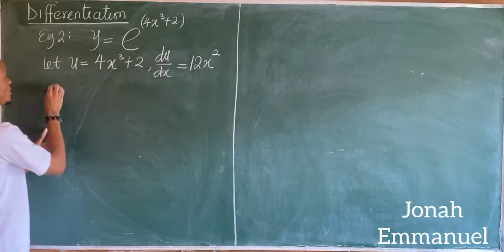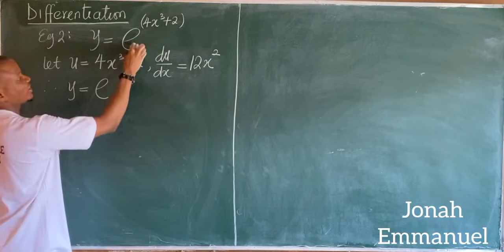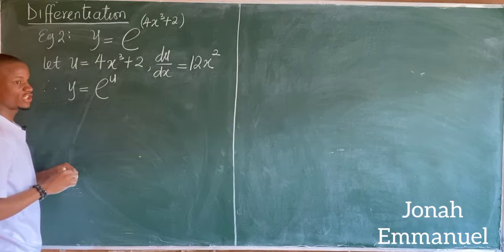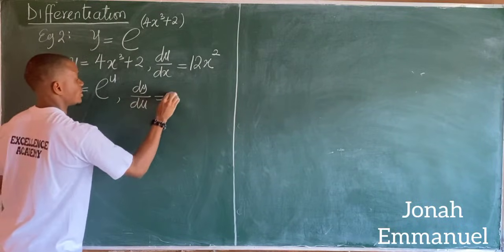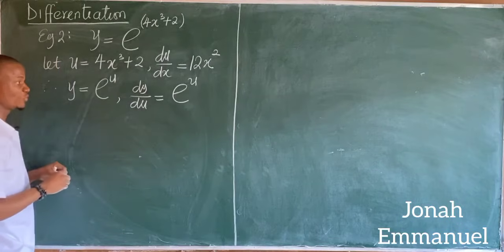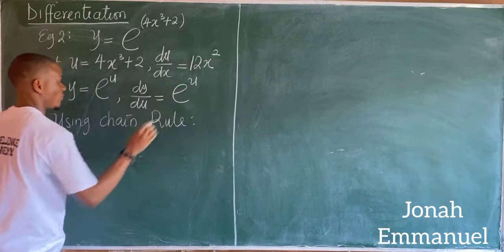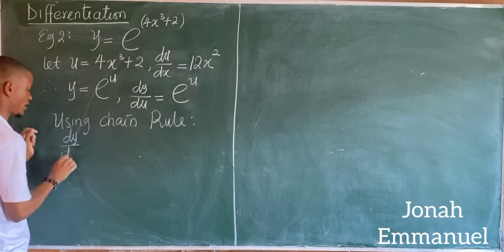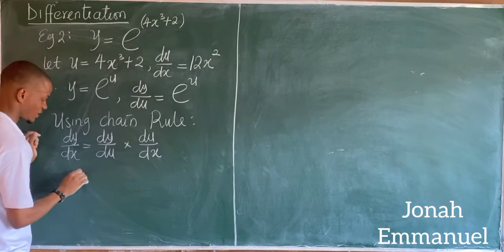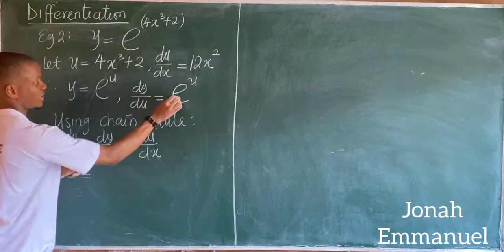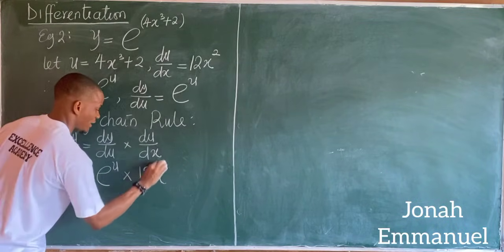Next up, therefore y is now equal to exponential u, since all of 4x cubed plus 2 is u. If I differentiate y with respect to u, I'll have that dy over du is equal to exponential u. Using the chain rule formula, dy over dx equals dy over du times du over dx. So that's exponential u times 12x squared.